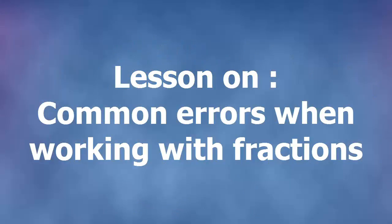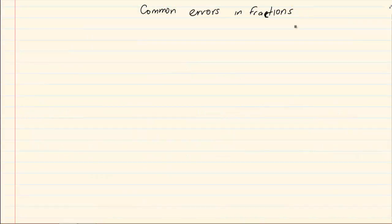Hi and welcome to my maths class. Today we are going to discuss common errors that are found in fractions. Now when we are doing fractions, we usually think of a numerator and a denominator. But as we get older, these numerators and denominators become unknowns. So I've got x over 5 plus x.